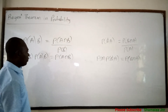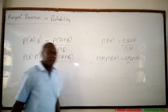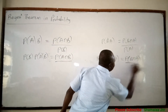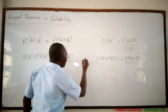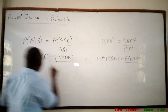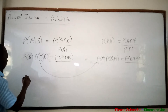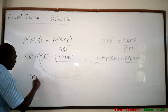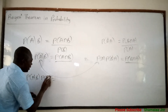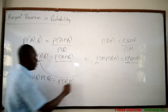Now viewers, look on the board. Probability of A and B is the same as probability of B and A, because A intersect B equals B intersect A. So since these two expressions are equal, we can equate them and say that probability of B times probability of A given B is equal to probability of A times probability of B given A.